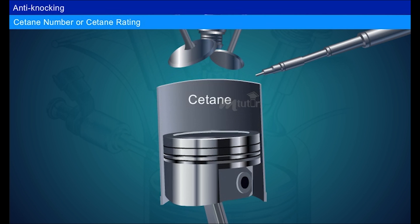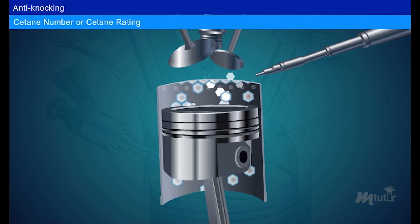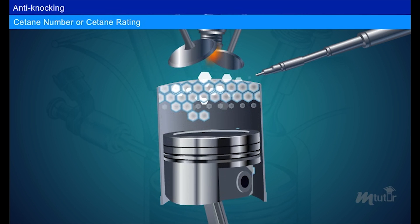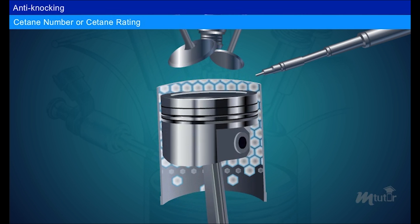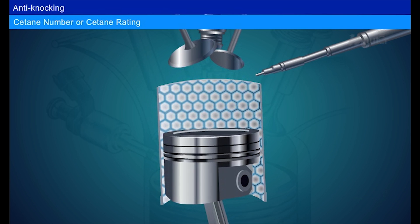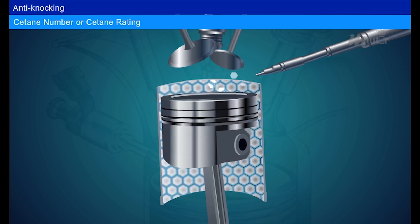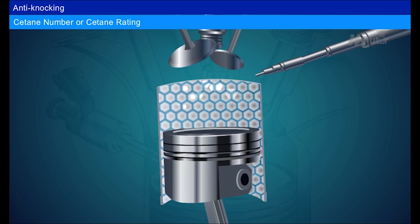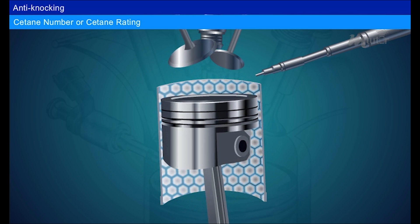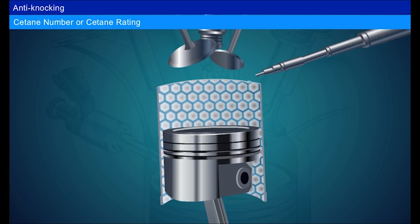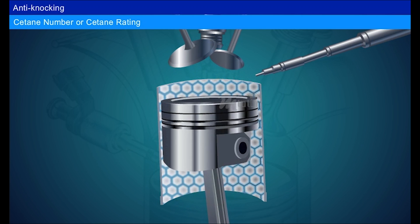The cetane number (CTN) is used to rate diesel fuel. Cetane has better resistance to knocking and its anti-knock value has been given as 100. The suitability of a diesel fuel is determined by its cetane value, which is the percentage of hexadecane in a mixture of hexadecane and 2-methylnaphthalene that has similar ignition characteristics as the diesel fuel.